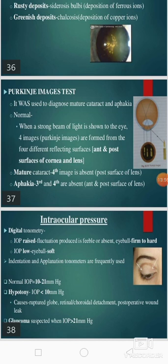Then the last thing is the intraocular pressure. Digital tonometry is done to measure the IOP. If the IOP is raised, the fluctuation produces feeble or absent movement and the eyeball may feel firm to hard. If IOP is low, the eyeball is soft. Indentation and applanation tonometers are used to measure IOP. Normally IOP is 10 to 21 mmHg. Hypotony is called when IOP is less than 10 mmHg and glaucoma is suspected when IOP is more than 21 mmHg.